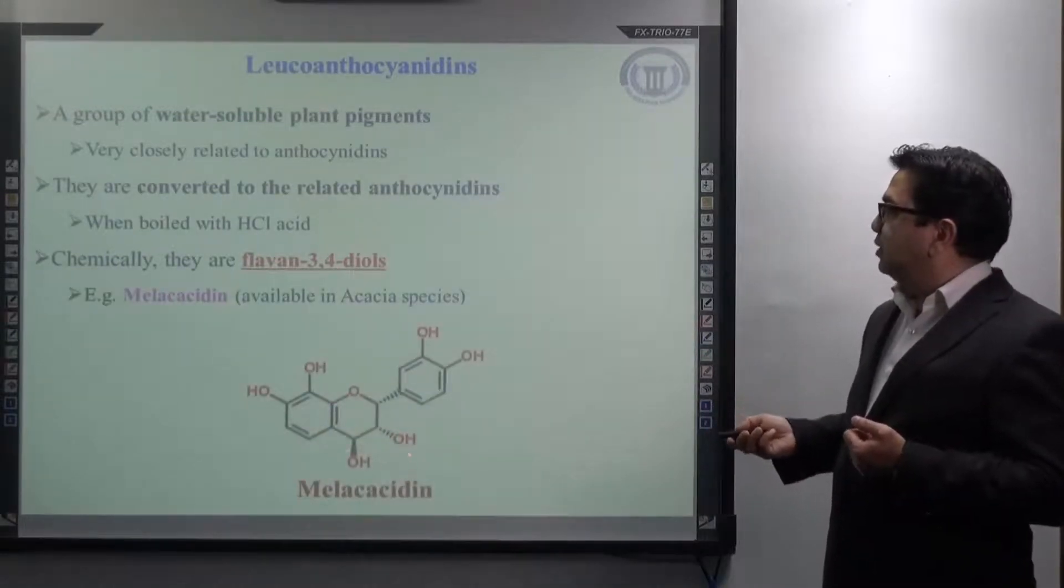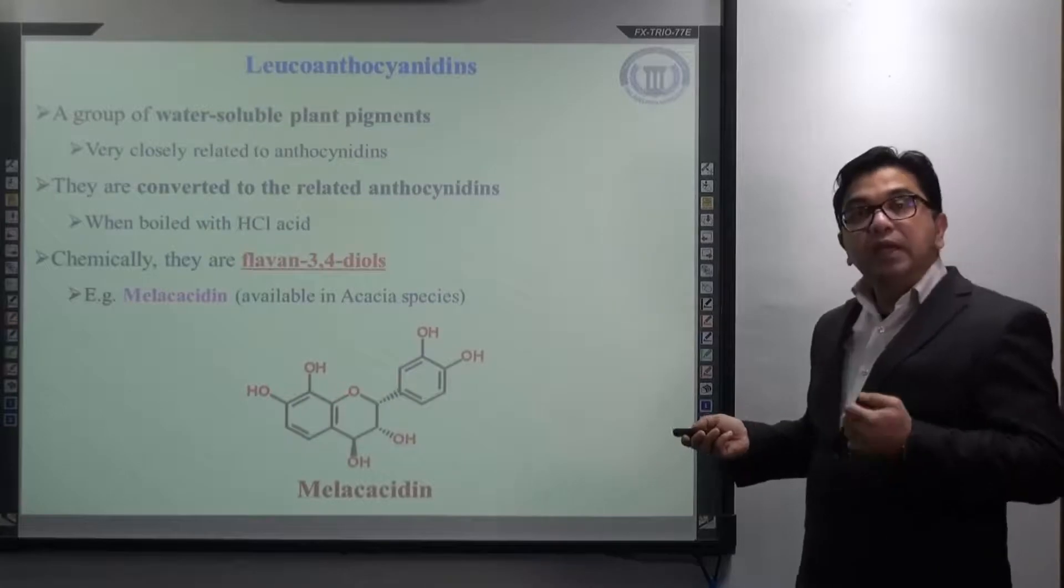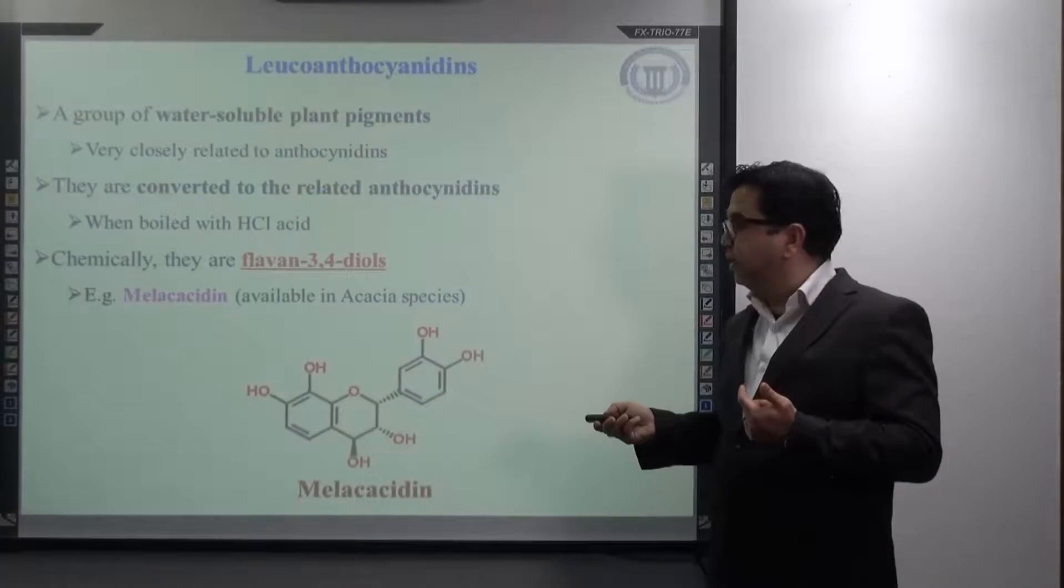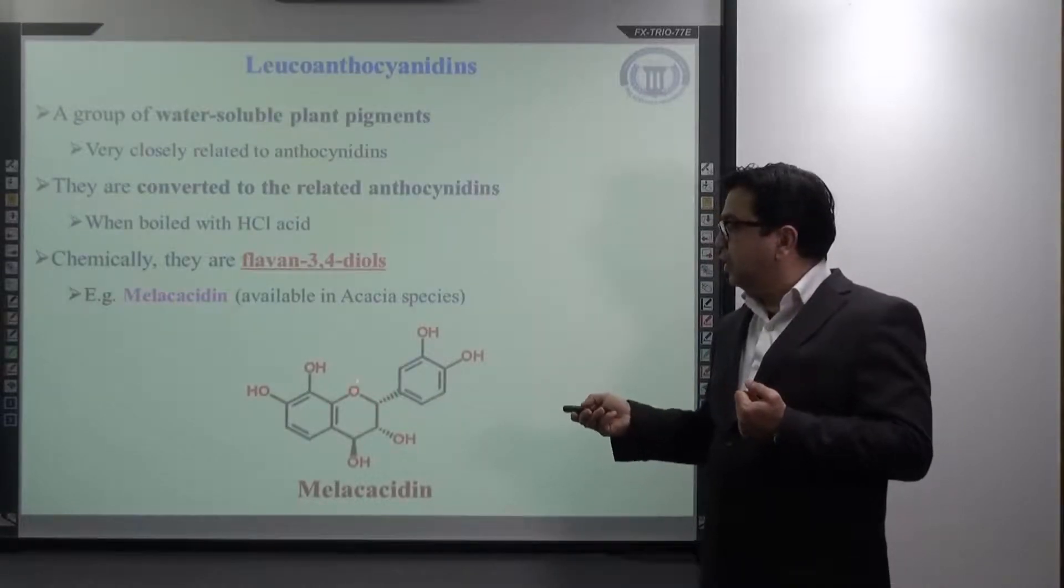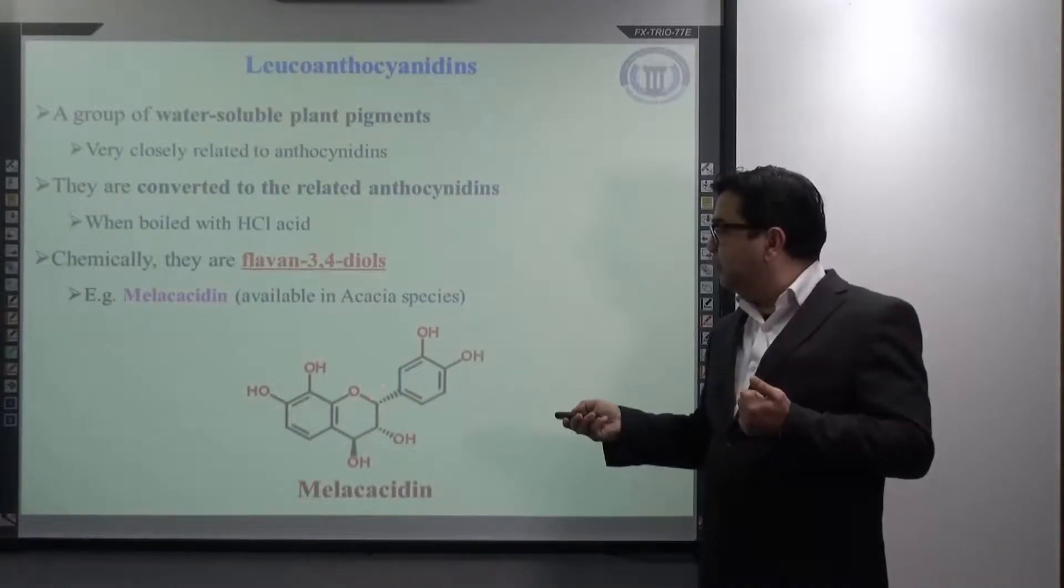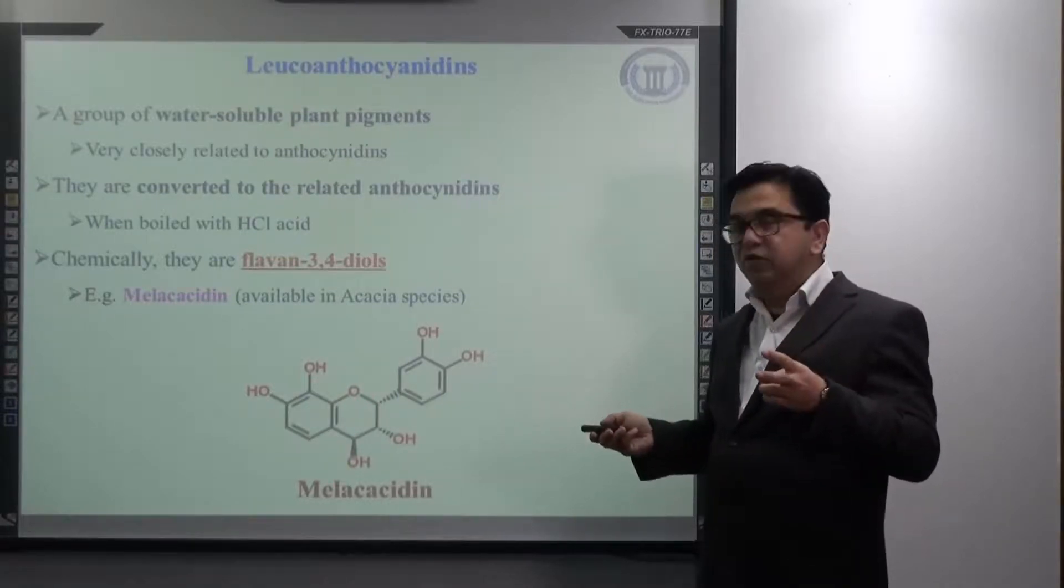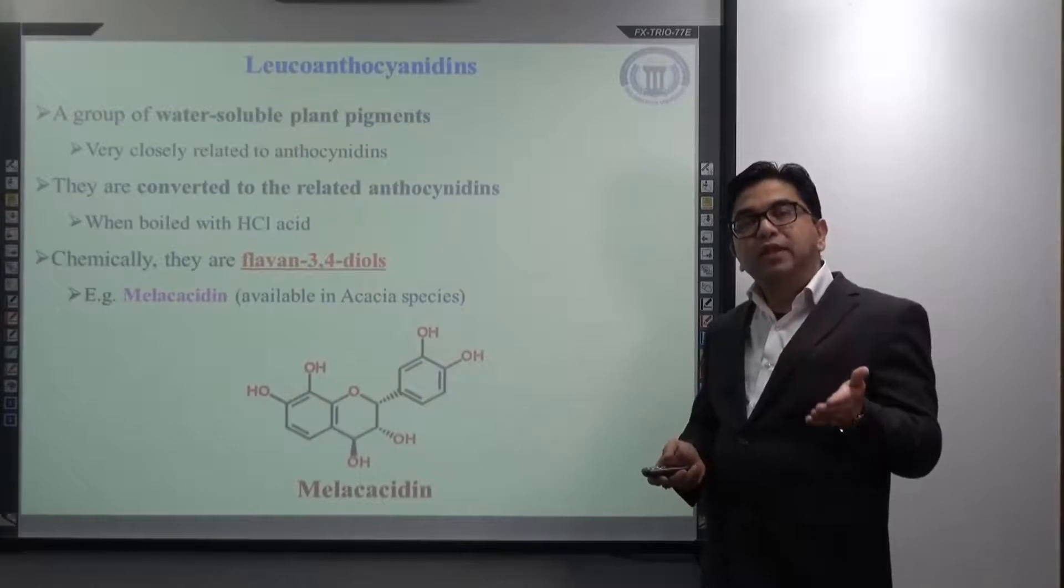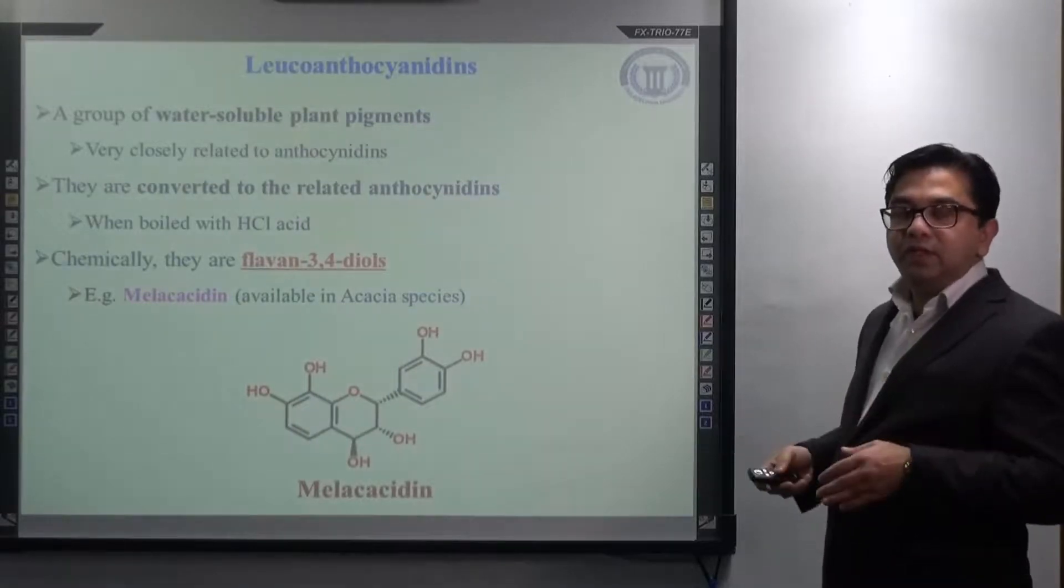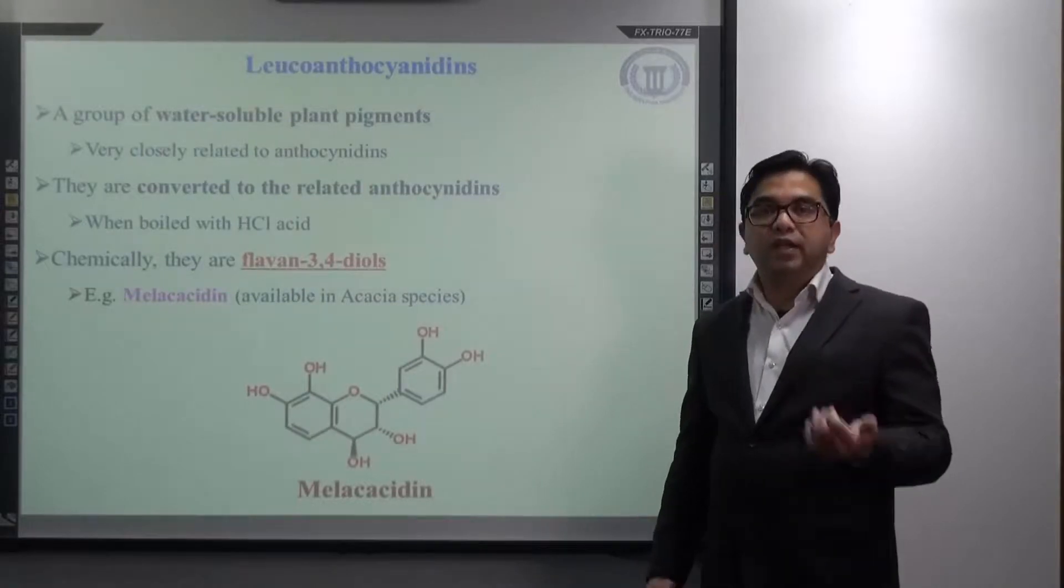One of the examples is melacacidin, which is available in acacia species. If you see, the difference between anthocyanidin and leucoanthocyanidin is, in leucoanthocyanidin, it does not contain positive charge on the ring oxygen of ring C, whereas anthocyanidin has positive charge at the oxygen atom of ring C. This is the difference. But they are known as leucoanthocyanidin because they will get converted into the relative anthocyanidin when it is boiled with hydrochloric acid. Or in other words, when it comes in contact with stomach HCl, it is also found to get converted into relative anthocyanidin.